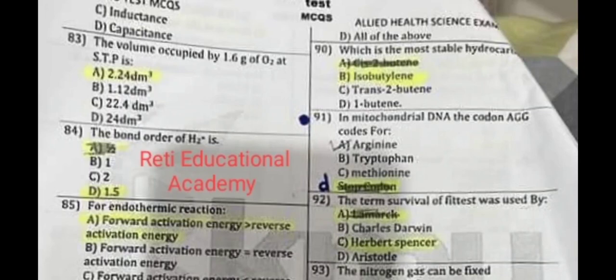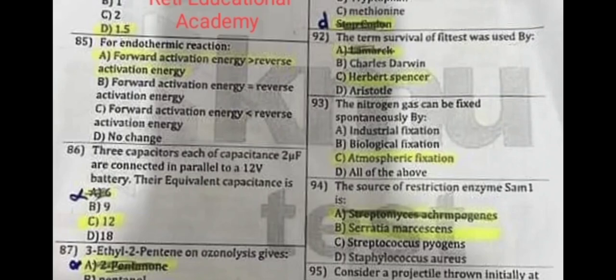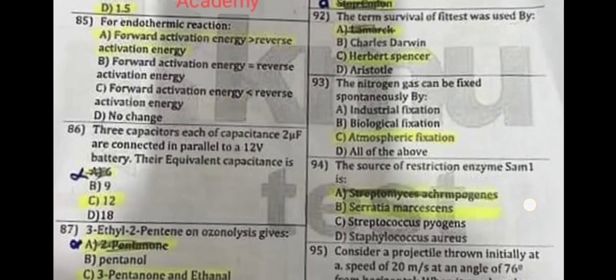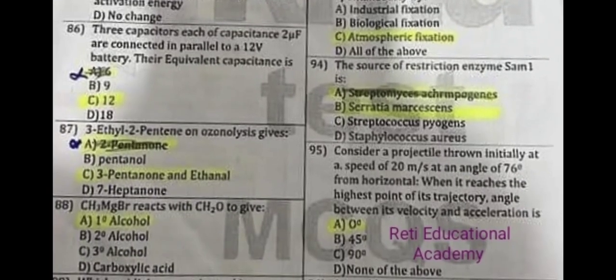Question number 91: In mitochondrial DNA, the codon AGG codes for D. Question number 92: The phrase 'survival of the fittest' was used by Herbert Spencer. Question number 93: Nitrogen gas can be fixed by atmospheric fixation. Question number 94: The source of restriction enzyme SamI is B: Serratia.